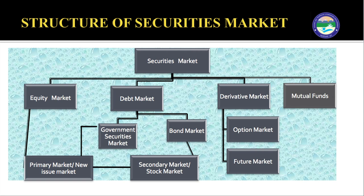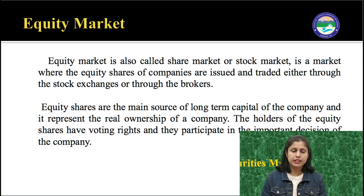Next is the structure of securities markets. The securities market consists of the equity market, debt market, derivatives market, and mutual funds. The equity market has two further segments: primary market and secondary market. The debt market is formed by combining the government securities market and the bond market, and it also has a primary market and secondary market. The derivative market is for risk-averse investors, and mutual funds are for small investors.